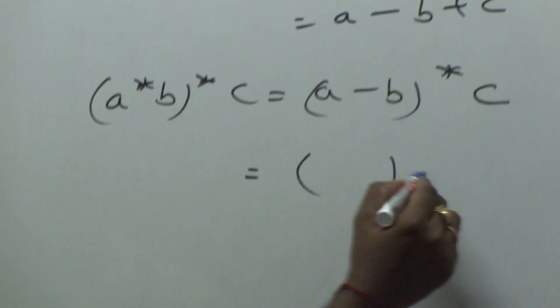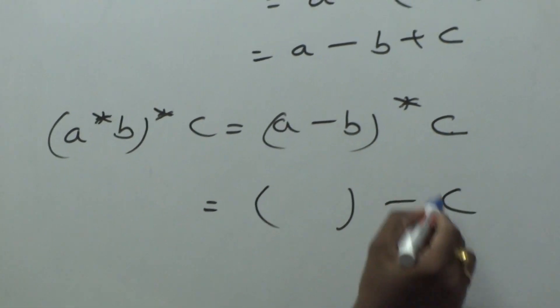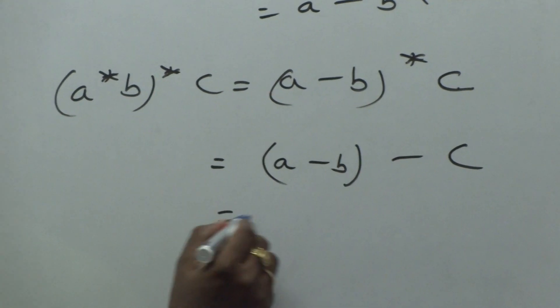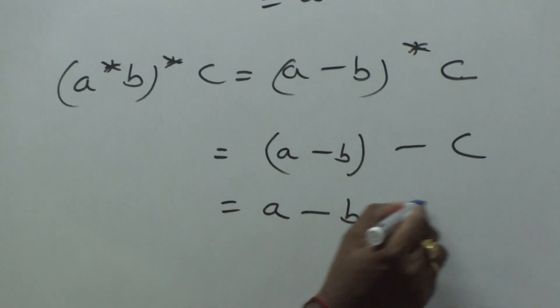A minus B. A minus B. In place of B, what is there? C. In place of A, what is there? A minus B. Then you will get A minus B minus C.